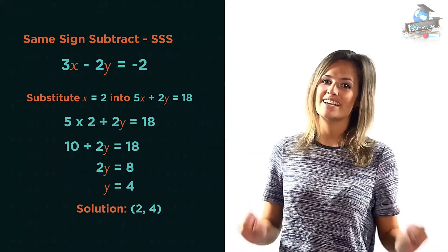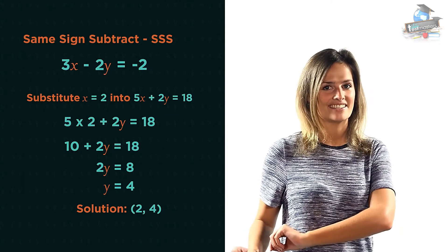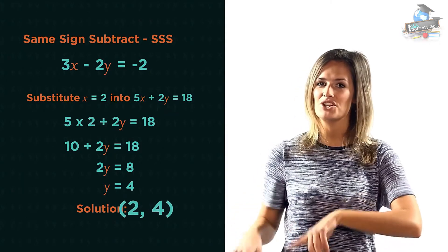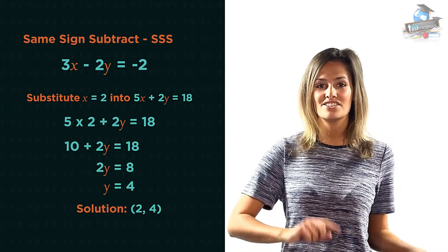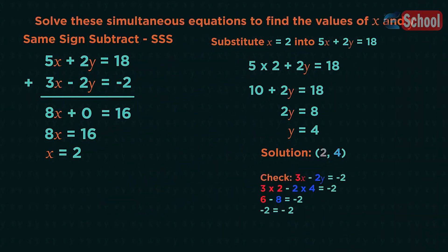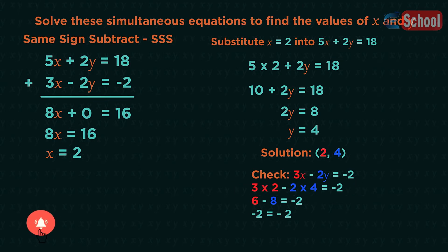It's then really important to check our answers, so we need to substitute 2, 4 back into the other equation. Into this equation: 3 times 2 minus 2 times 4 equals negative 2. So 6 minus 8 is negative 2, which is correct.